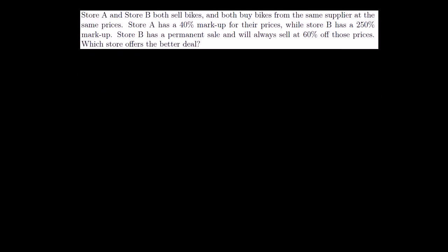Let's do one more. Store A and store B both sell bikes and both buy bikes from the same supplier at the same price. Store A has a 40% markup. That means whatever they buy the bike for, they sell it for 40% above that. While store B has a 250% markup. Store B has a permanent sale and always will sell it 60% off those prices. Which store has a better deal? So let's say that they're both buying the bike. So let's say x is equal to the price from supplier. So that's the price that both bike stores buy their bicycles at. They both buy bikes from the supplier at the same price. That's this x that I'm going to start off with.